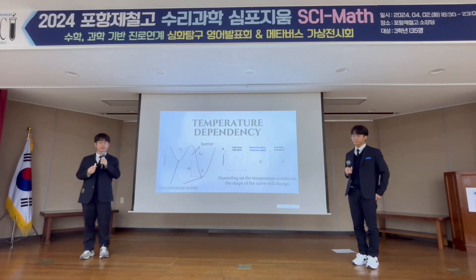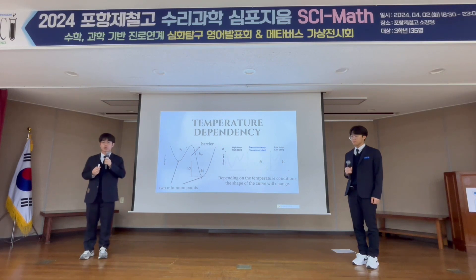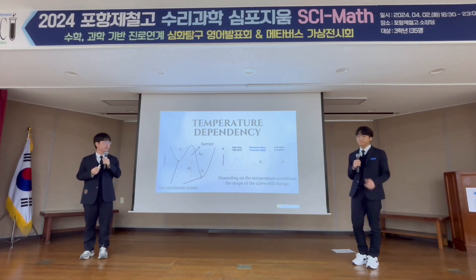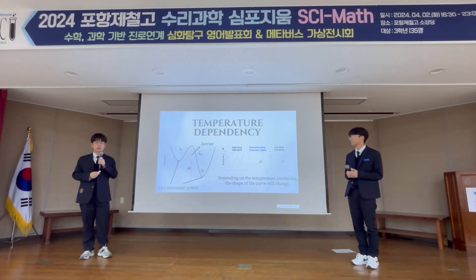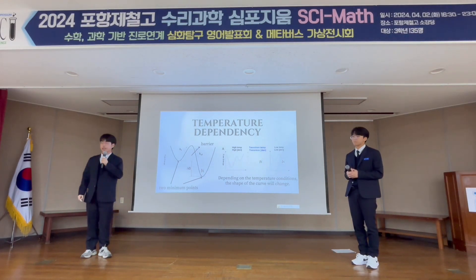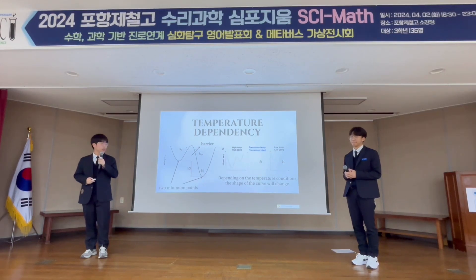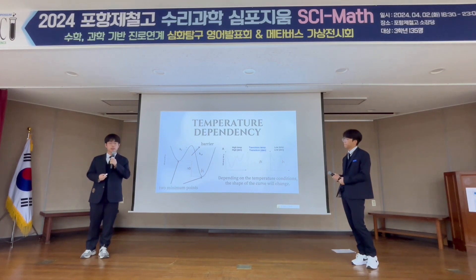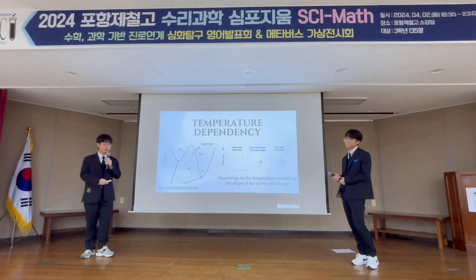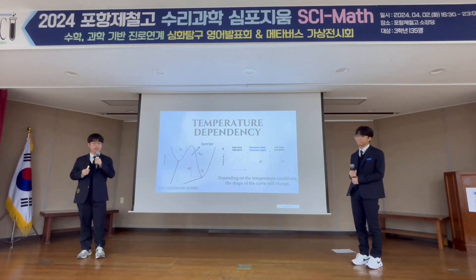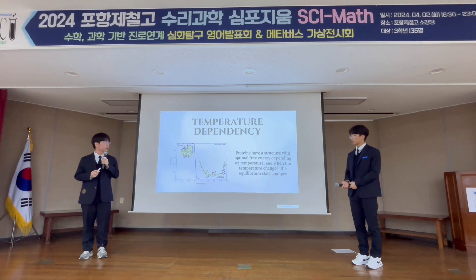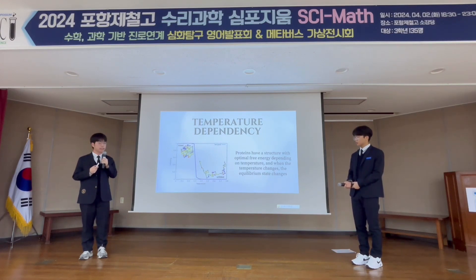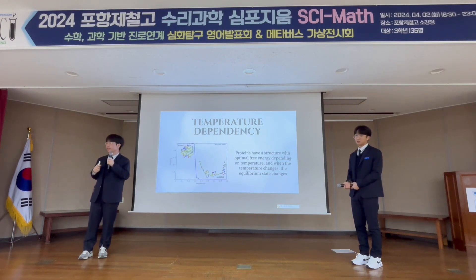Let's briefly talk about the temperature dependency of protein in relation to free energy. According to the free energy property, we can explain why proteins are easily affected by temperature. Let's approximate the process of protein folding as having two thermodynamically stable states: the folded and the unfolded. The y-axis of this graph indicates the free energy, represented as a curve with two minimum points and a barrier between the two. Depending on the temperature conditions, the shape of the curve changes, and the more stable state can be identified. This indicates that proteins have an optimal free energy structure depending on the temperature, and when the temperature changes, the equilibrium state also changes — so the structure of the protein can easily be denatured.